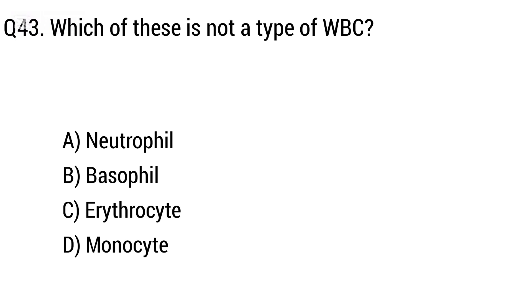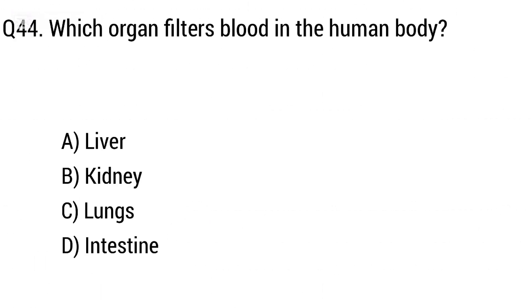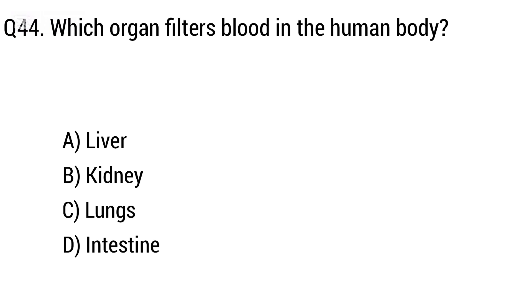Question 43: Which of these is not a type of WBC? Option A: neutrophil, B: basophil, C: erythrocyte. The right answer is option C, erythrocyte.